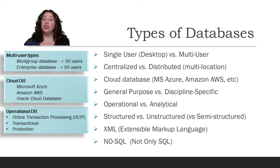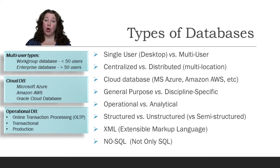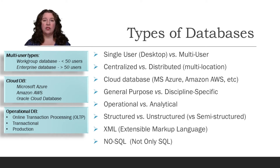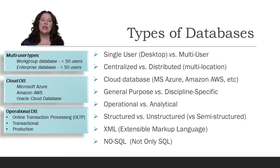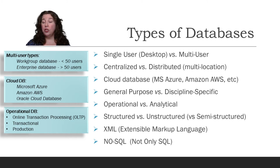You can have your database designed as general purpose or discipline specific. Is it only going to hold certain pieces of information, or is it going to be general purpose for everybody? For example, do you want separate databases for accounts payable, accounts receivable, sales, and HR, or one general-purpose database that everybody can access? You need to keep track of what is the purpose of your database, why are you doing it, and what can you get out of it.